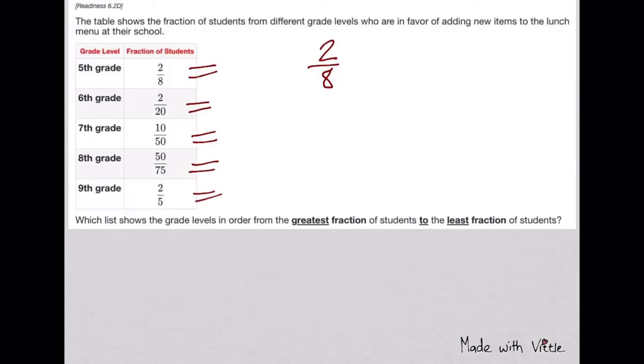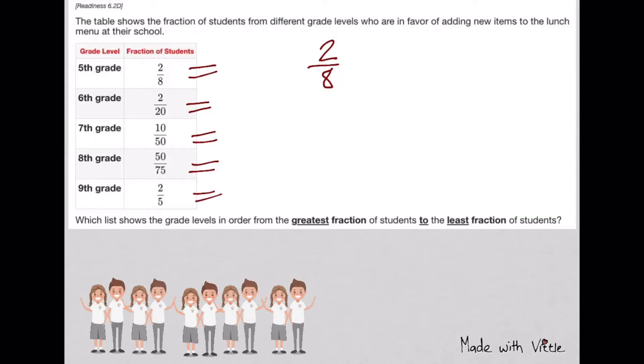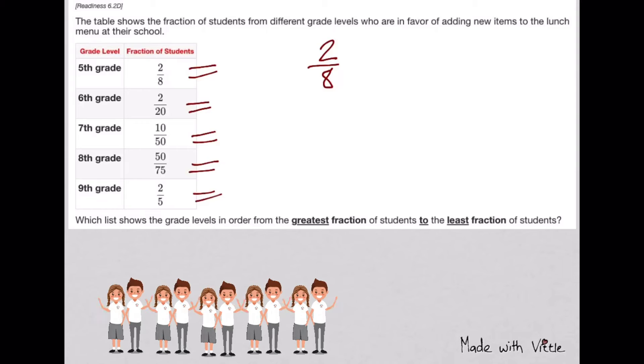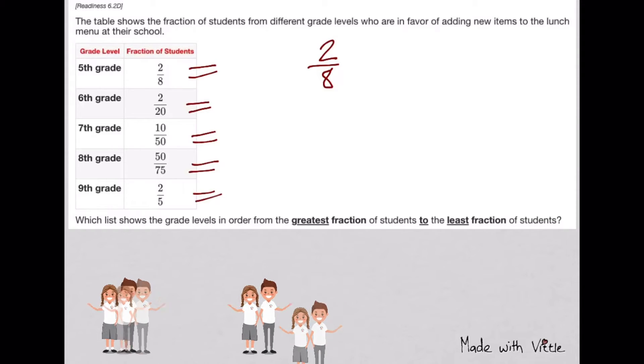The table shows the fraction of students from different grade levels who are in favor of adding new items to the lunch menu. Which list shows the grade levels in order from greatest fraction to least fraction?